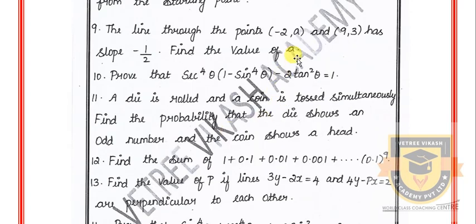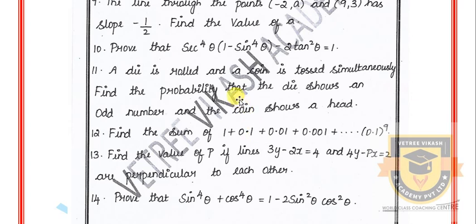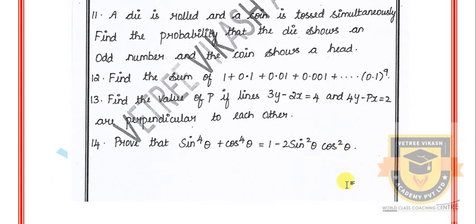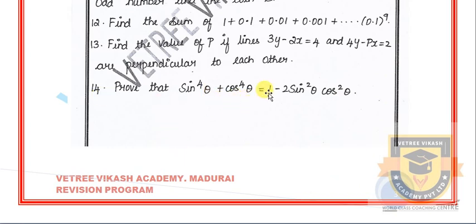The line through the points (−2, a) and (9, 3) has slope −1/2 — find the value of a. Prove that sec⁴θ(1 − sin⁴θ) − 2tan²θ equals 1. A die is rolled and a coin is tossed simultaneously — find the probability that the die shows an odd number and the coin shows a head. Find the sum of 1 plus 0.1 plus 0.01 plus 0.001 plus … up to 0.1 to the power of 9. Find the value of p if the lines 3x − 2y equals 4 and 4y − px equals 2 are perpendicular to each other. Prove that sin⁴θ plus cos⁴θ equals 1 minus 2sin²θ cos²θ.